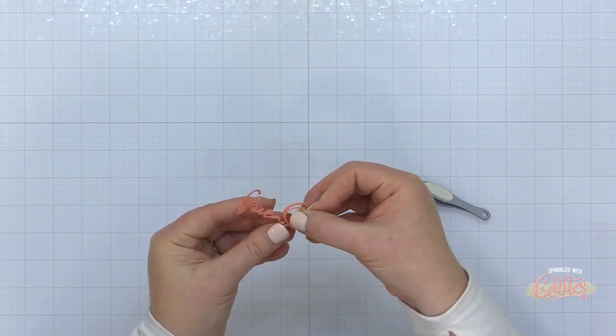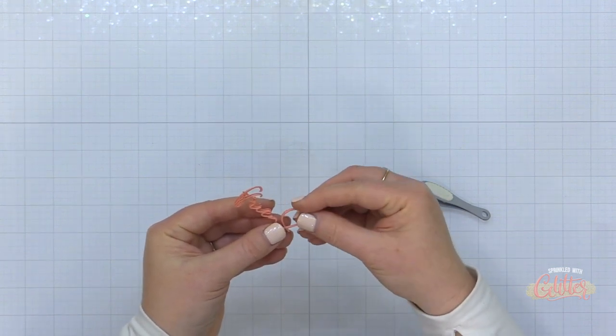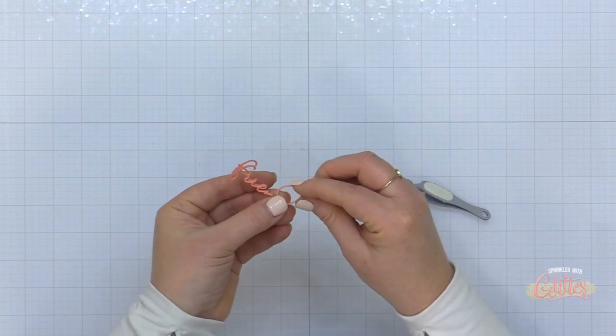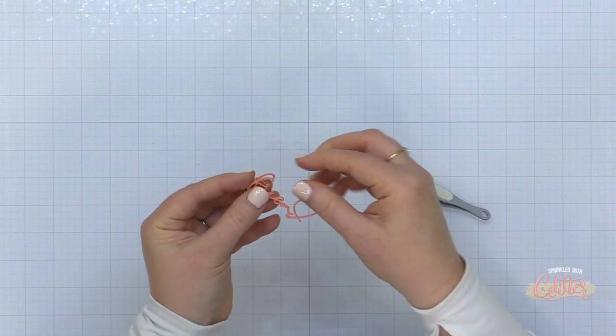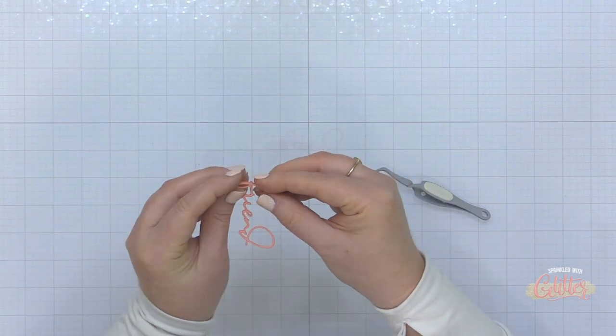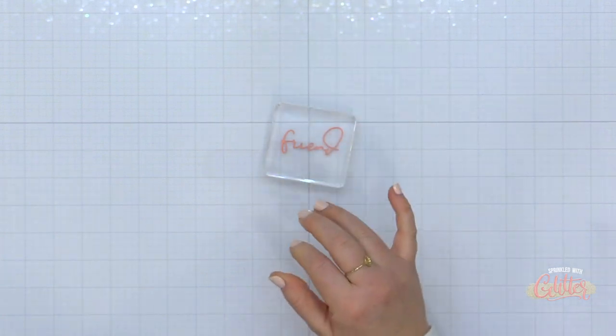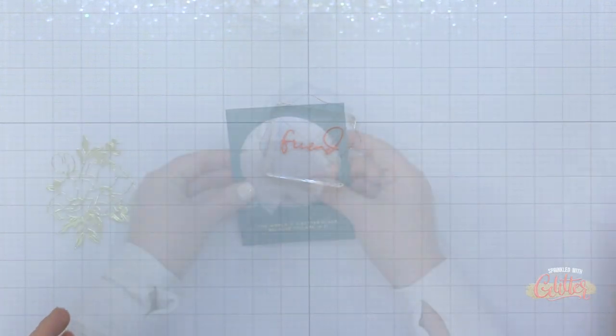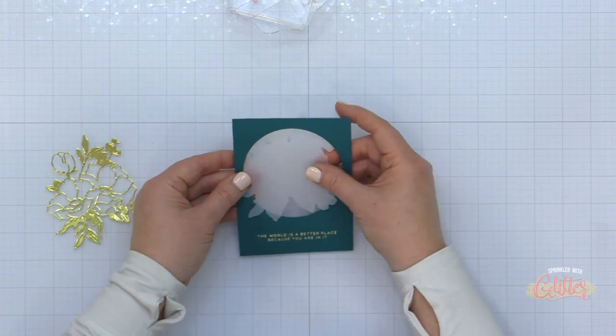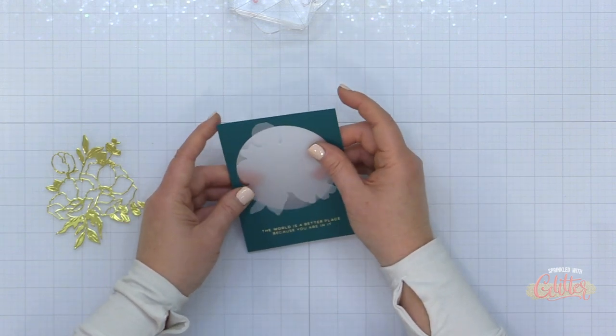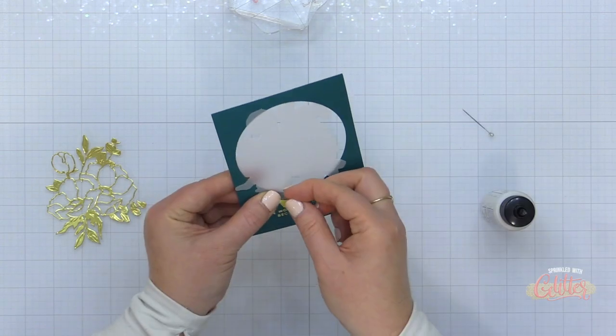Now once I stacked up the three that have adhesive on the front side I'm going to take the fourth one that has no adhesive at all and layer that on the top. Then I'm just going to make sure that all of the edges of this intricate sentiment die are aligned and once I have everything in place I'm going to just set that aside with some acrylic blocks over the top to make sure that everything stays in good contact while that adhesive dries.